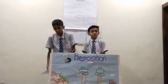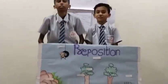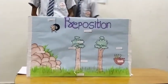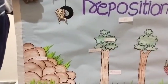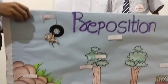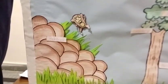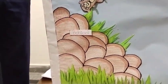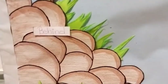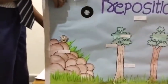Now we will give some examples of prepositions using a working model. First, the monkey is behind the rock. Here, 'behind' is a preposition.